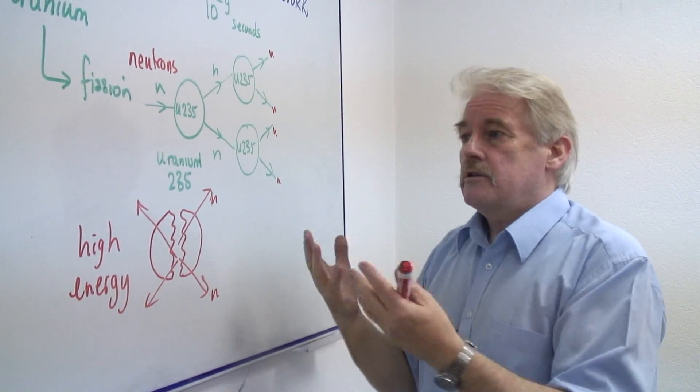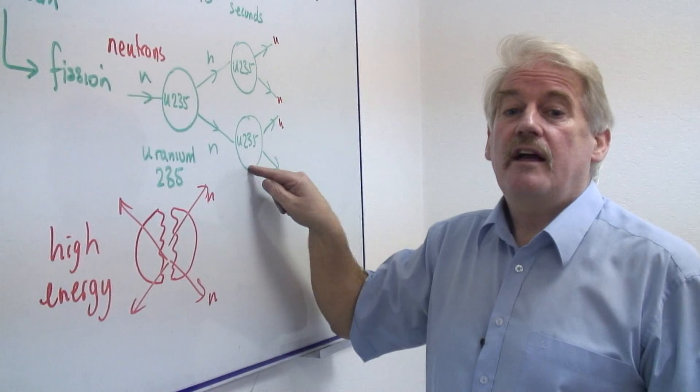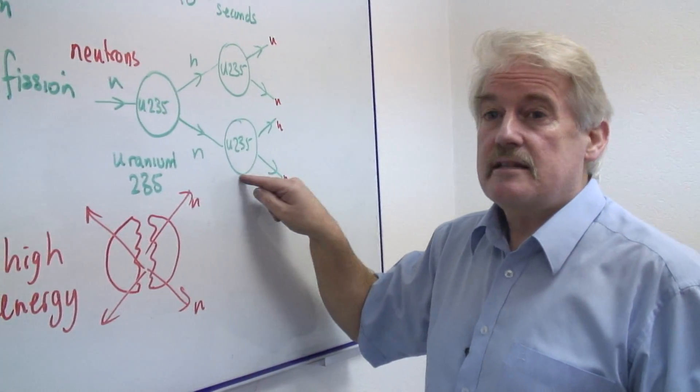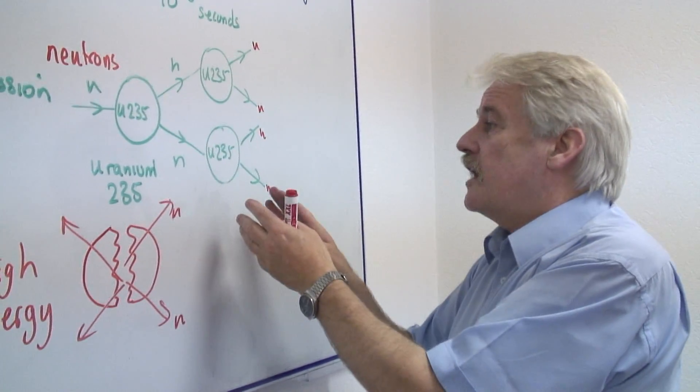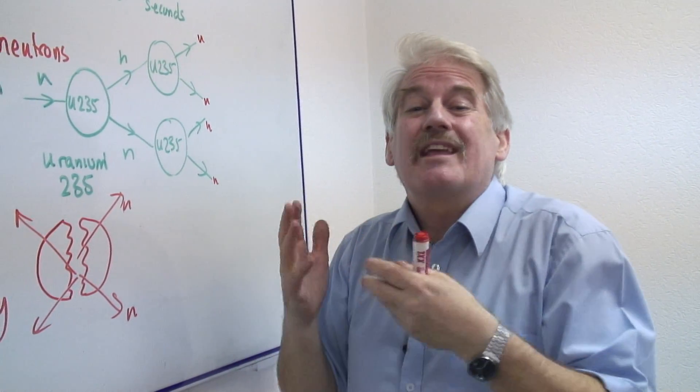But in a reactor, we also have to have something to slow down these neutrons. Because actually, even if the neutron hits a uranium-235 atom, it doesn't necessarily work in this way. Actually, sometimes it just gets absorbed and it turns into something else.